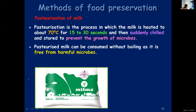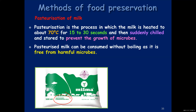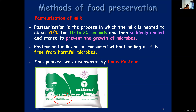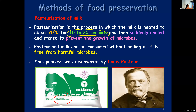In milk packets it is written - have you noticed it before? Pasteurized milk. Pasteurized means it has already been treated to kill the disease-causing germs or microorganisms. Discovered by Louis Pasteur - you can see his picture there. Louis Pasteur found out a method for sterilizing milk. You should know the temperature as well as the time for which it is treated: 15 to 30 seconds the milk will be heated at around 70 degrees Celsius, then suddenly cooled and stored.